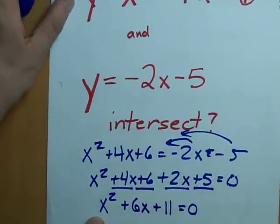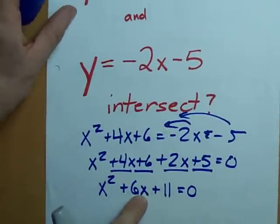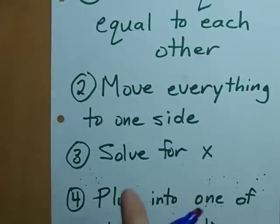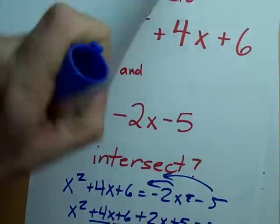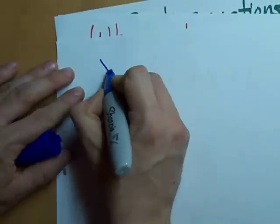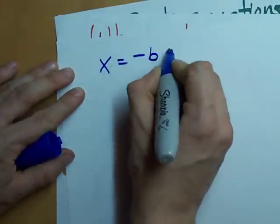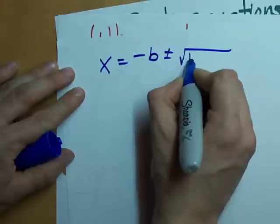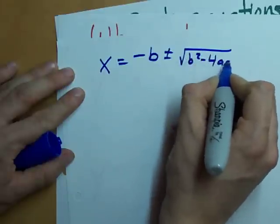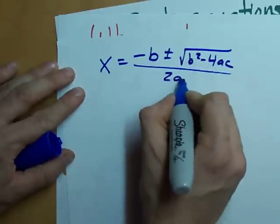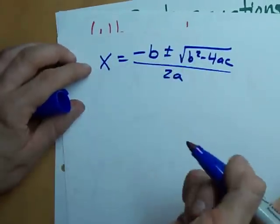A is 1. B is 6. C is 11. So, let's do that. The quadratic formula. Negative b plus or minus the square root of b squared minus 4ac all over 2a. Let's plug in the numbers that we just found.